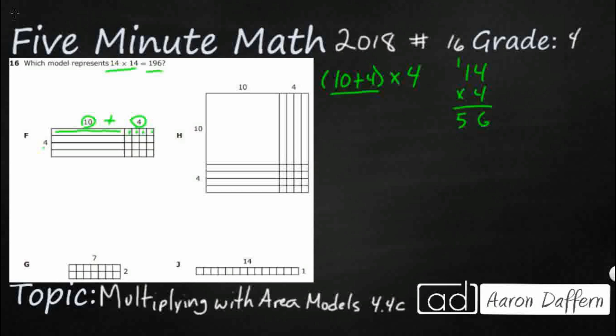The distributive property says we take this 10, we multiply it by the 4, so that's 40. And then we take this 4, multiply that by the 4, that's 16. Add those two together, and there you go. You get the same answer, 56.